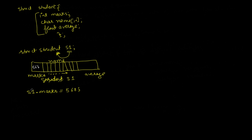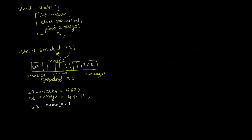If you want to access s1.average, it will be stored at the corresponding location — for example, 49.68. So 49.68 is stored at that average location. This is how you can define a structure and use it to store different types of data. You can also store a string: if you do s1.name and access index location 0, you can access different index locations.